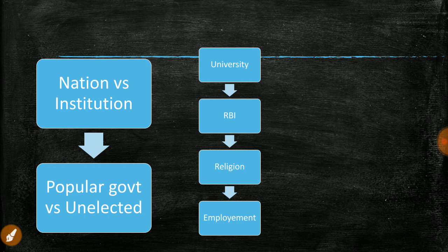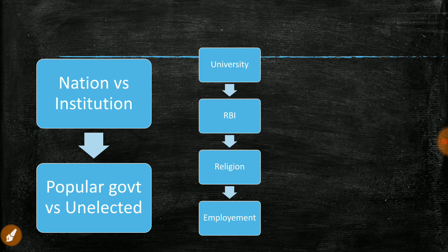A committee recently suggested creating a new payment regulatory body to regulate digital payments, which increased significantly after demonetization. RBI showed complete dissent, saying it has been managing payments since its inception and that payment is a small part of banking itself. RBI does not want its power diluted by government interference. The government is also trying to siphon funds from RBI to government coffers to implement populist schemes ahead of elections.